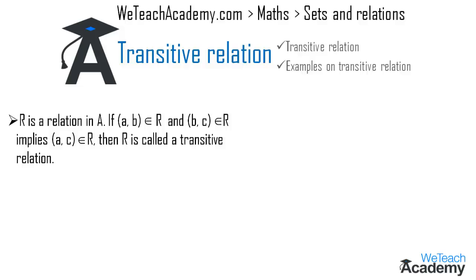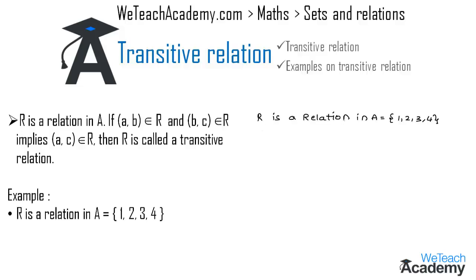Let me explain this concept with the help of an example. Here r is a relation in the set a = {1, 2, 3, 4}. Let us write the set of ordered pairs of r as: (2,2), (1,1), (3,2), (2,3), and (3,3).